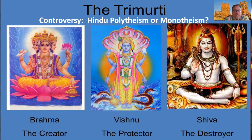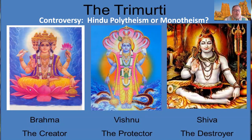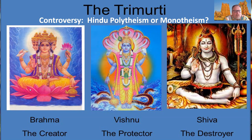In Hinduism there's what's called the Trimurti. One of the controversies is whether Hinduism is polytheistic or monotheistic. There are multiple gods with multiple names, but almost everyone who worships Hinduism worships only one god entity and believes the other gods are just portions, avatars, or reflections of that god. So if you believe in Brahma, you believe Vishnu and Shiva are just aspects of Brahma himself. Most Hindus believe they are monotheistic even though there are these three different life forces — the creator, the protector, and the destroyer.